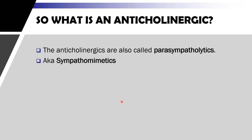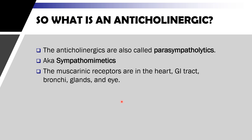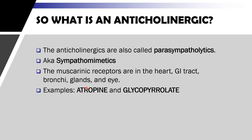When we block or shut down the parasympathetic nervous system, what will predominate is the effects of the sympathetic nervous system. The mechanism of action of anticholinergic drugs is that they specifically inhibit the muscarinic receptors, but not the nicotinic receptors, blocking the muscarinic effects. The muscarinic receptors are found on the heart, the GIT, the bronchi, the glands, and the eyes. Examples of anticholinergic drugs are atropine and glycopyrrolate.